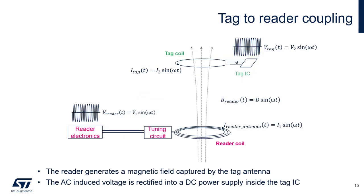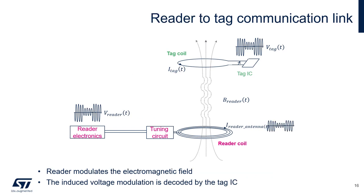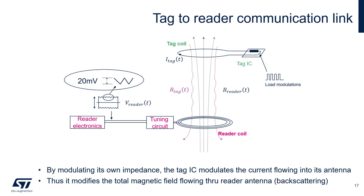For tag to reader coupling, the reader generates a 13.56 MHz signal that's sent to the reader coil antenna. This creates a magnetic field that's coupled to the tag coil. Once coupled, the tag takes the 13.56 MHz signal and rectifies it, creating a DC voltage to power itself. For the reader to communicate to the tag, it simply modulates the 13.56 MHz carrier. This is then induced to the tag coil, and the tag decodes the modulation on the carrier. For the tag-to-reader communication link, the tag simply modulates its own impedance, creating load modulation on the 13.56 MHz carrier, which is then coupled to the reader, and the reader decodes this signal.